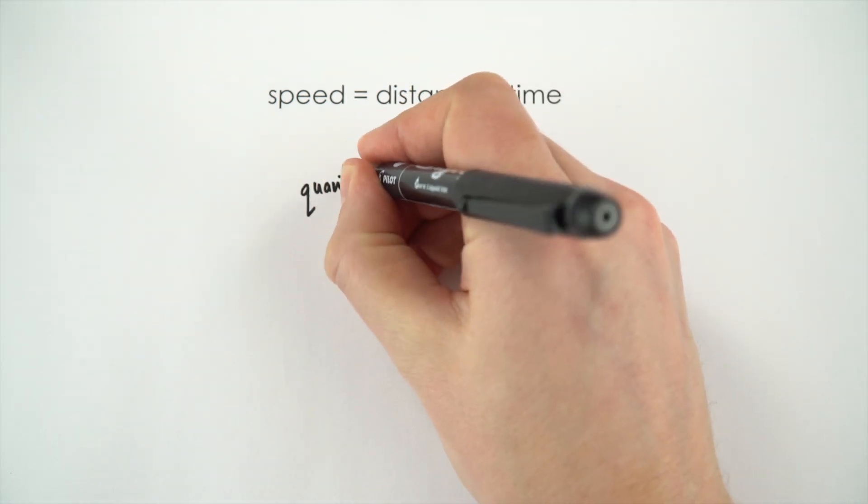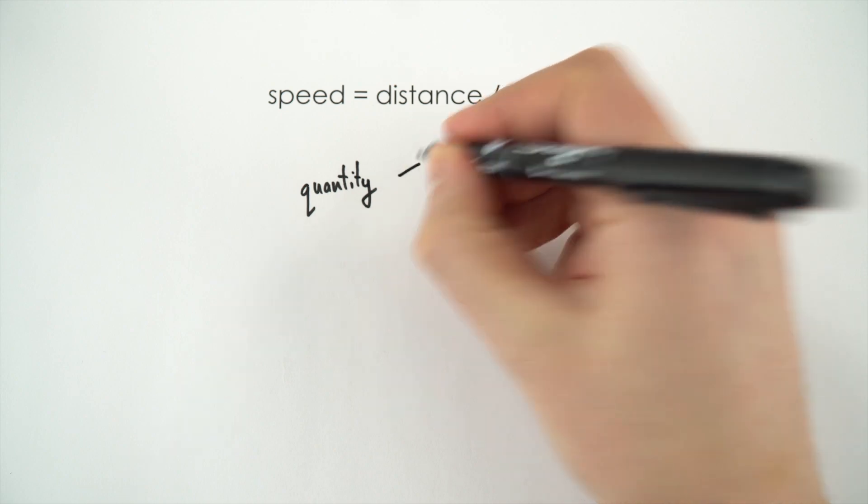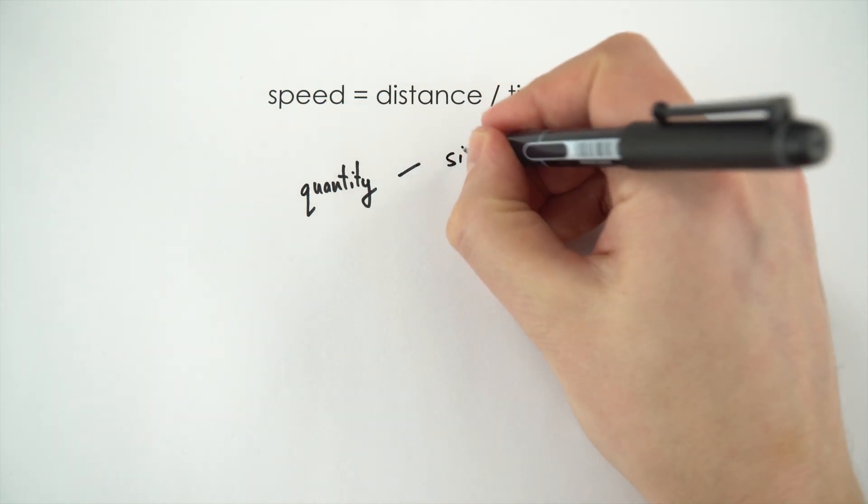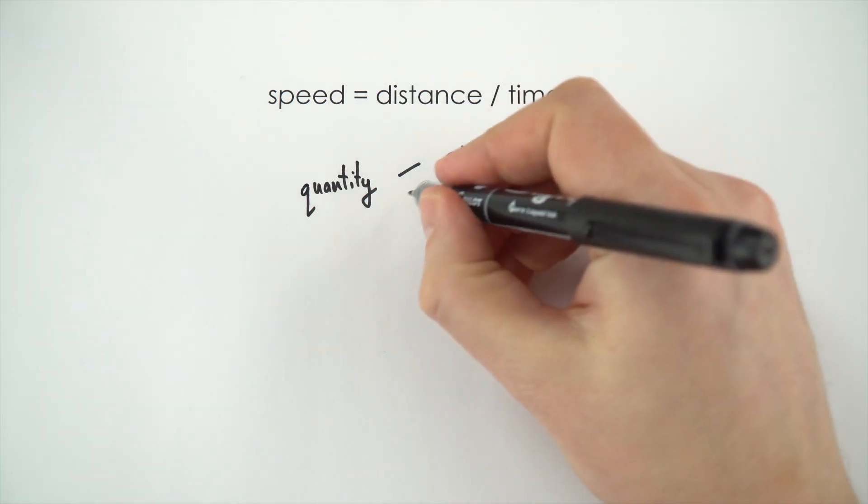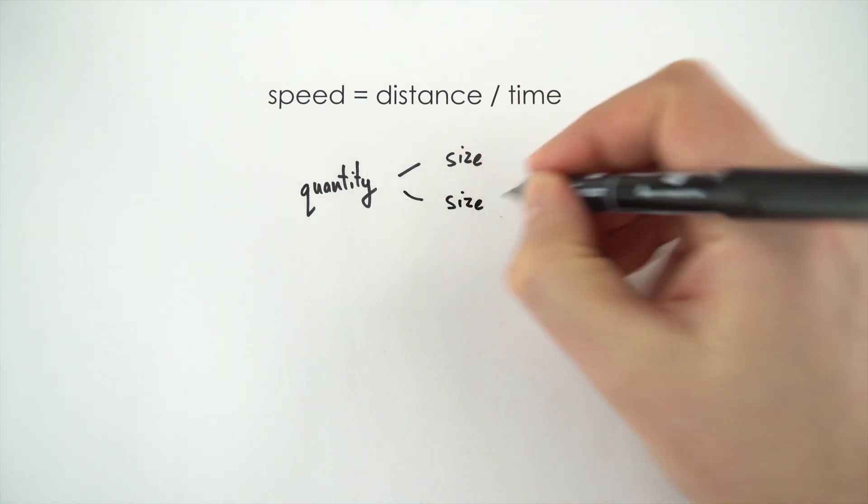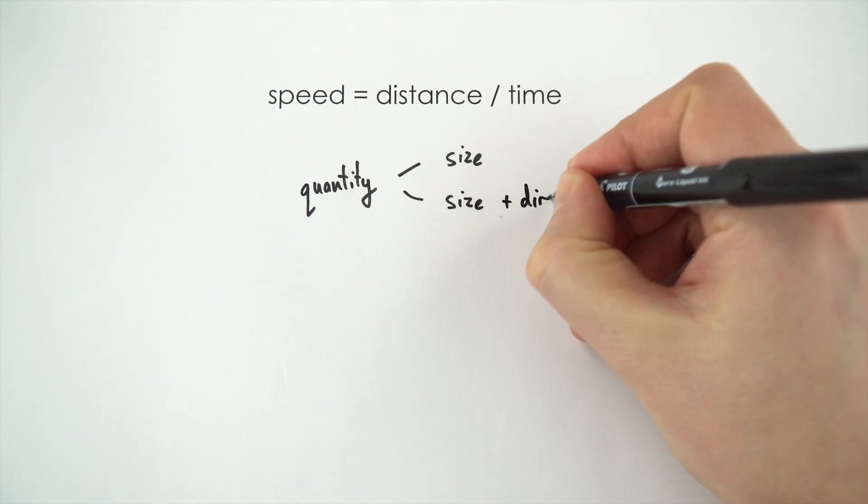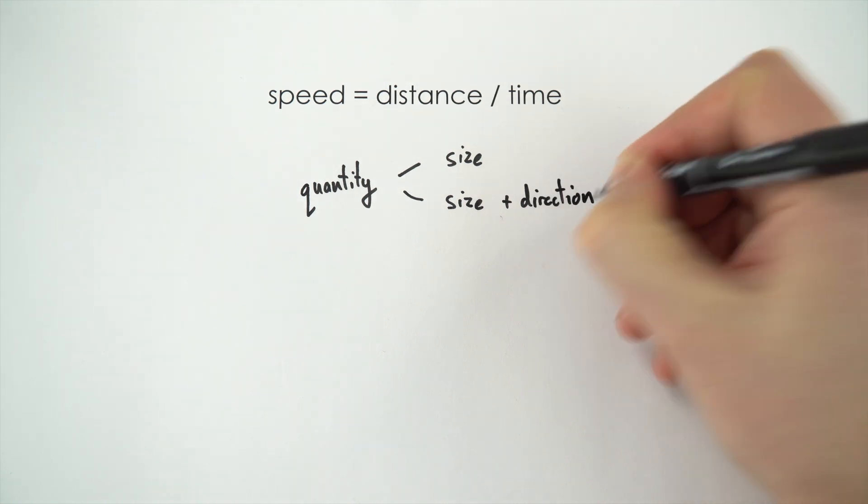So in physics there are two main sorts of quantities. We have scalars, which have a size, or how big they are, which is called a magnitude, and we also have some things which have a size and direction as well, and these are what we call vectors.